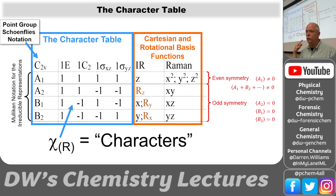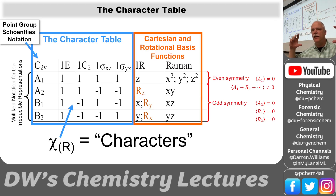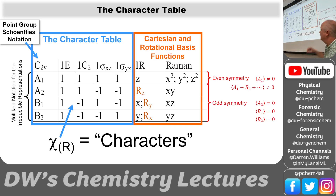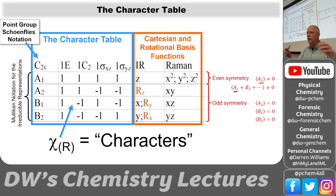I'll try to be precise in my language: rather than saying the contents of the integral are the top row, I should say they contain the top row. The first example has only top-row symmetry, but the second has many parts — it contains one part that is the top row, so it will be non-zero.